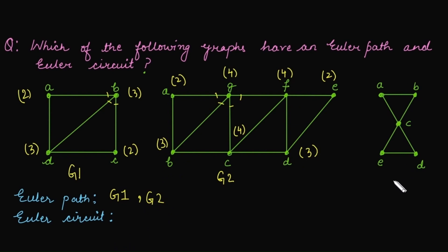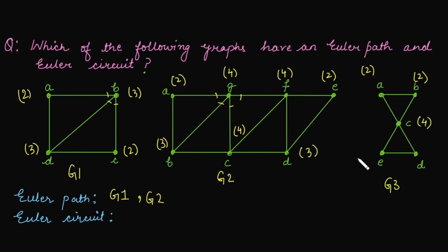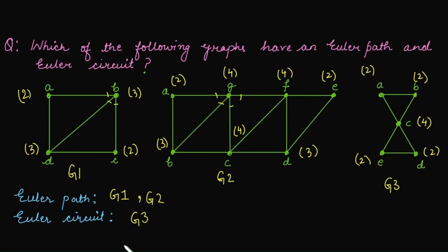For graph G3: degree of one vertex is 2, another is 2, vertex C has four incident edges so its degree is 4, degree of vertex E is 2, and degree of vertex D is 2. The degree of each vertex is even, therefore G3 has an Euler circuit.